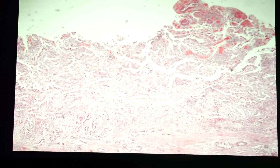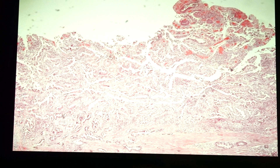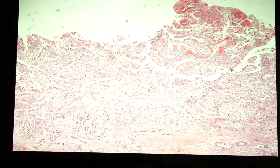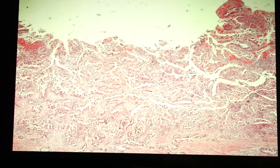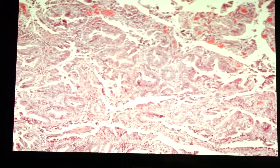Next we have slide 130, gallbladder carcinoma. Gallbladder carcinoma is an uncommon malignancy and is usually found as an incidental finding when patients undergo cholecystectomy for chronic cholecystitis. The most common form is adenocarcinoma, and in 95% of cases we would see the presence of gallstones.